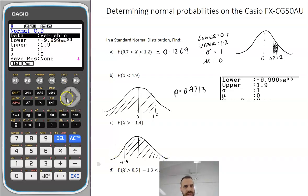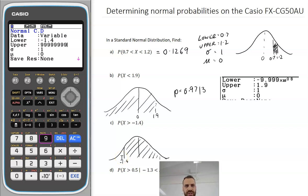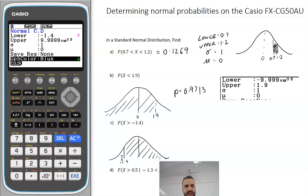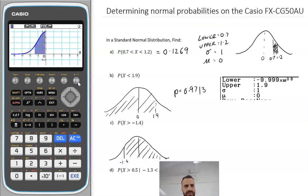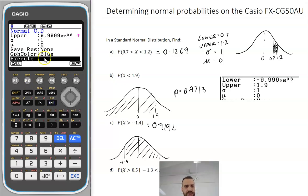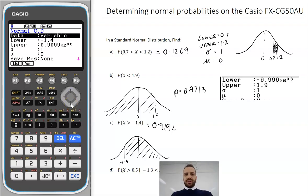So that means that my lower this time is that value, negative 1.4. My upper is a very large number. I will draw it like that. You can see I get a probability of 0.9192. And again, I would always put in what I typed into my calculator so that examiners can see what I'm doing.